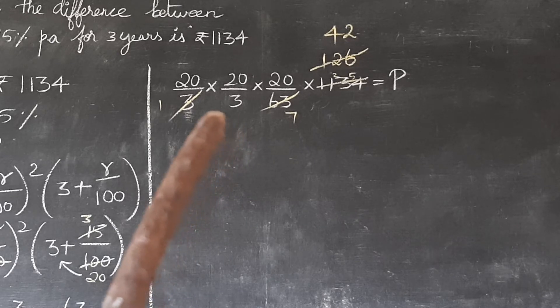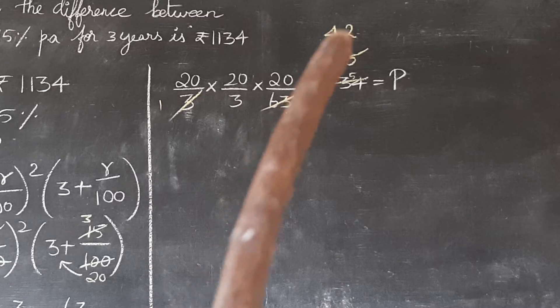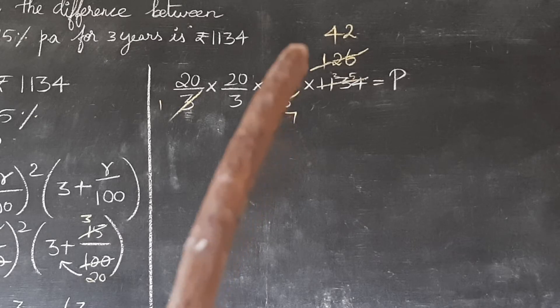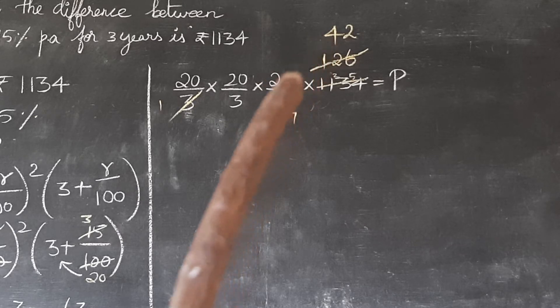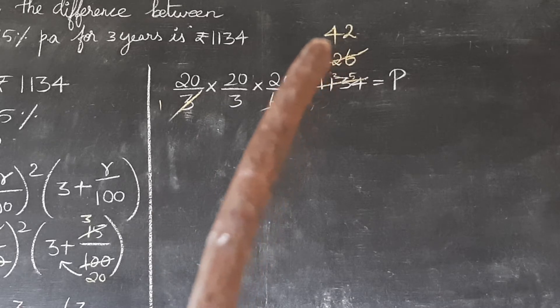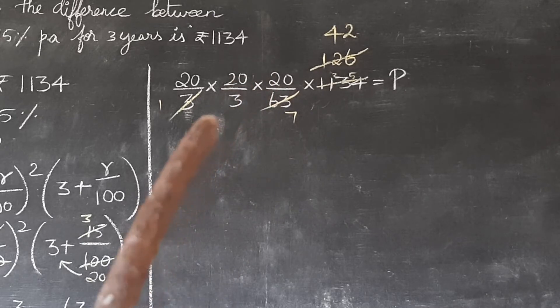So we can cancel this by 3 table or 7 table - both are divisible by 3 and 7. Otherwise you can take 7 ones are 7, 7 sixes are 42, or 3 ones are 3. Anything - you can cancel the number. I cancelled by 7 and by 3.